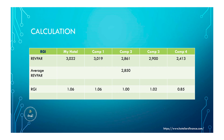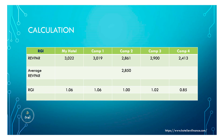Now let's calculate the RGI. My hotel's RevPAR is 3,022, comp one is 3,019, comp two is 2,861, comp three is 2,900, and comp four is 2,413. The average of all five is 2,850. Dividing my hotel's RevPAR of 3,022 by the average of 2,850 gives an RGI of 1.06. Comp one is also 1.06, comp two is 1.00, comp three is 1.02, and comp four is 0.85.